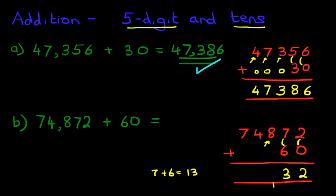In the hundreds column, we've got 8 plus 0, which is 8. But don't forget the 1 at the bottom. So 8 plus 1 is 9. The thousands column: 4 plus 0. The answer is 4. Lastly, the ten thousands column: 7 plus 0. The answer is 7.